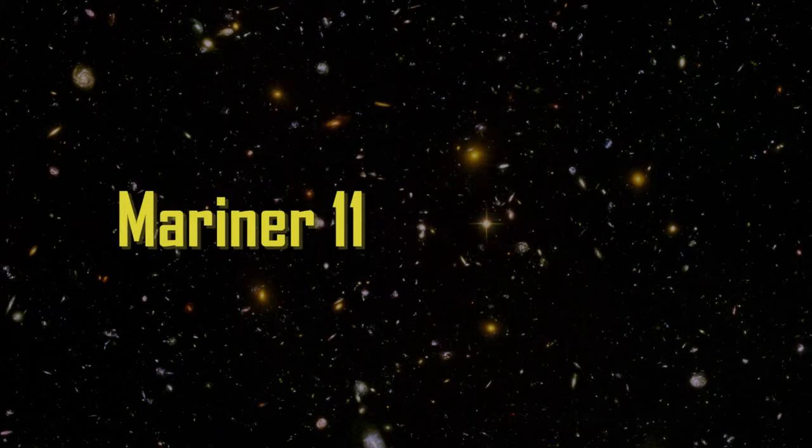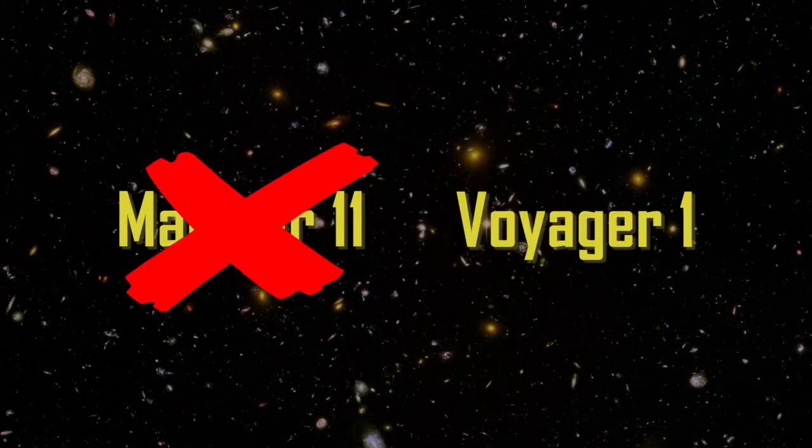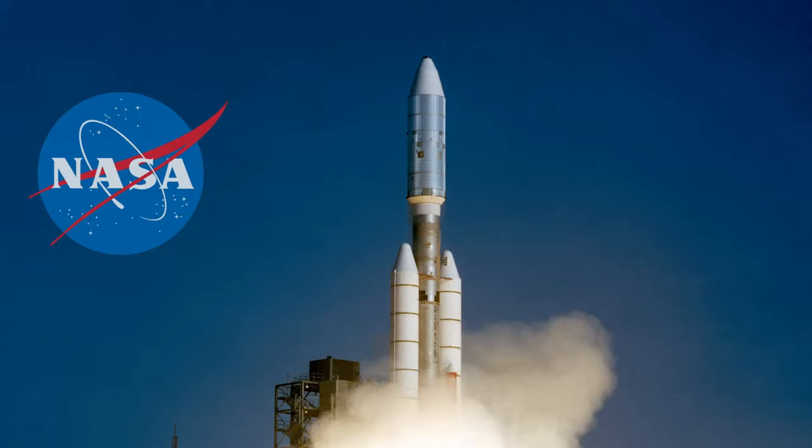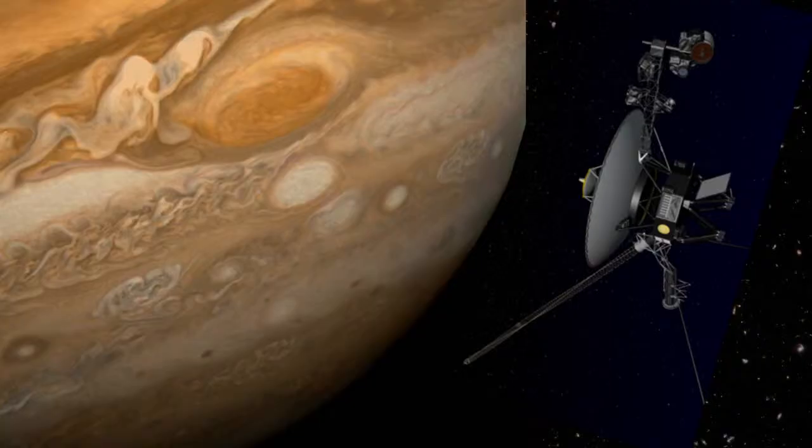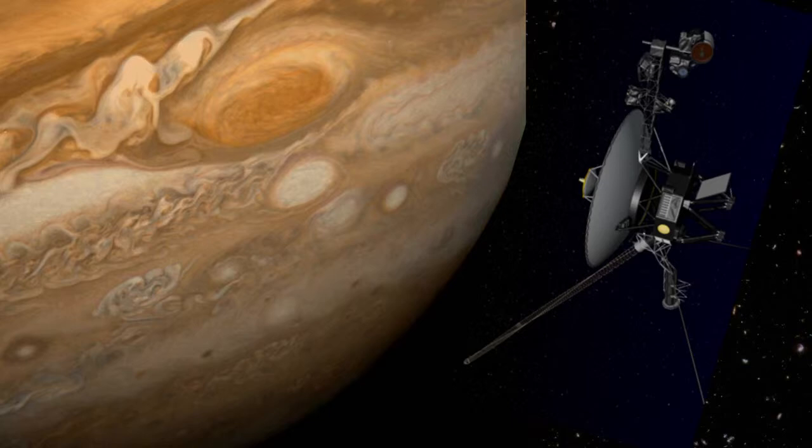Originally known as Mariner 11, Voyager 1 was launched on September 5th, ironically 12 days after the launch of its sister satellite, Voyager 2. Nevertheless, Voyager 1 still reached Jupiter and Saturn first.